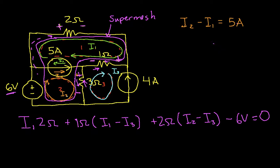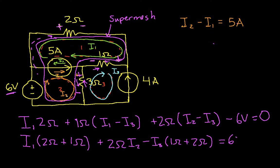So I can simplify this a little bit. And I can say then that I can factor out an I1 and get 2 ohms plus 1 ohm. And then I can say plus 2 ohms times I2. Now factor out I3, so I get minus I3, 1 ohm plus 2 ohms. And this is all equal to 6 volts. Pretty good so far, hopefully.